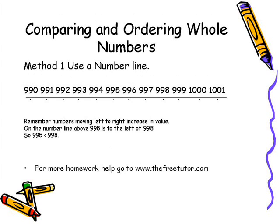The first method is we can use a number line. As you can see here in this picture we have our number line set up and the number line goes from 990 all the way to 1001. Now typically as numbers move from left to right on a number line they increase in value. In other words the number furthest to the left on the number line is small in value. The number furthest to the right on a number line is greater in value.